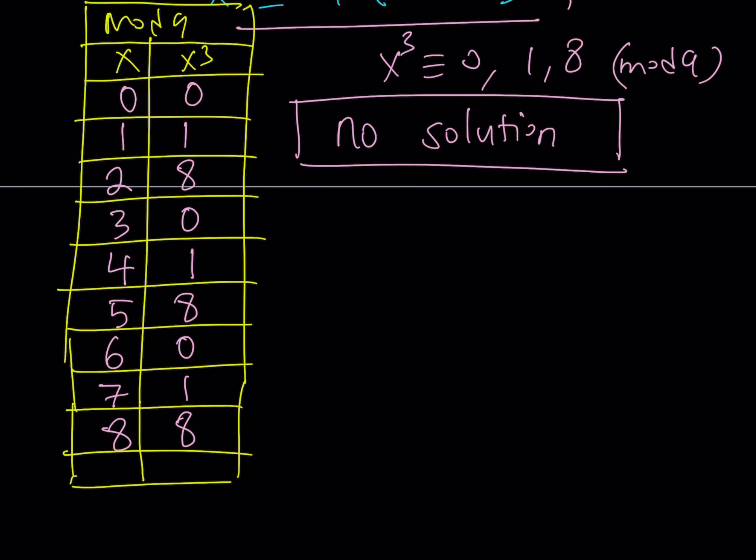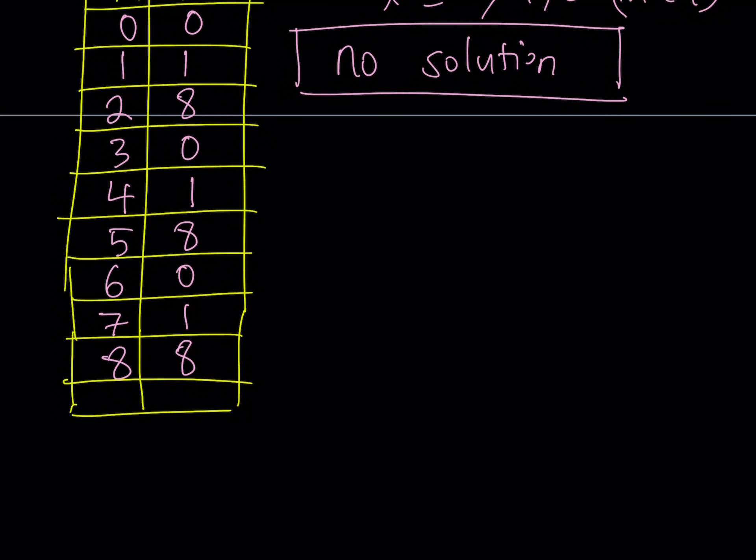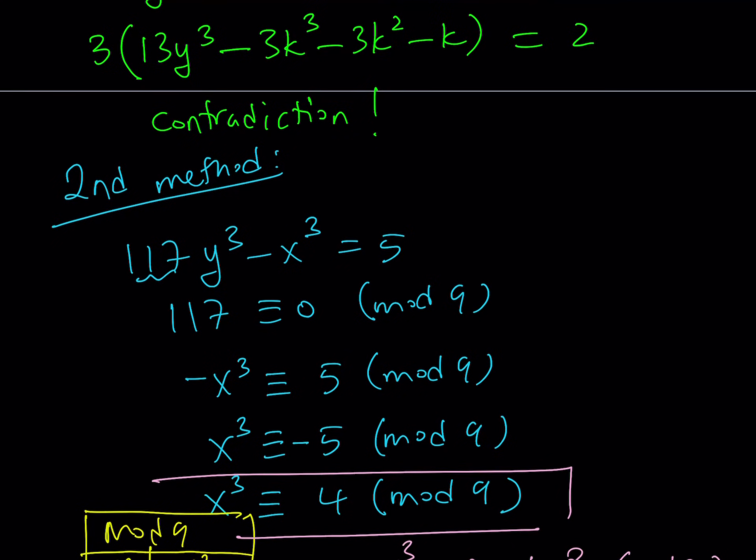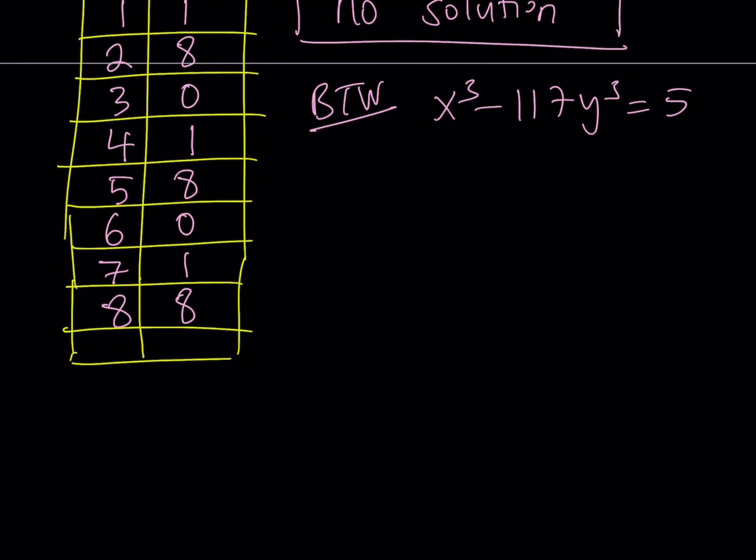Of course, they should agree with each other, right? This doesn't bring us to the end of the video yet, because I'm going to talk to you about an extension. So, by the way, we have x³ - 117y³ = 5. What happens if you flip the roles here and switch these around? In other words, set it equal to negative 5 instead of positive 5.